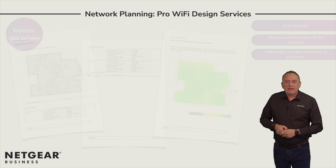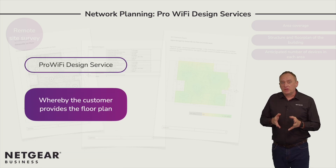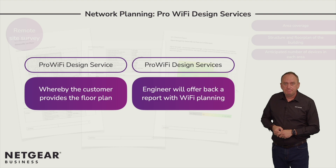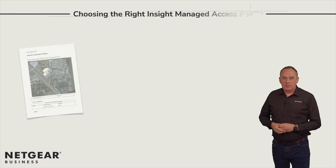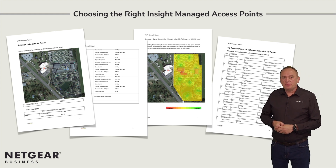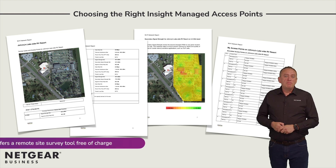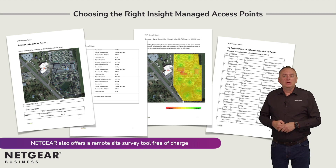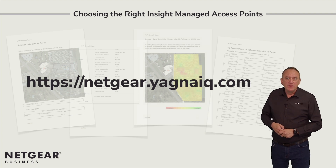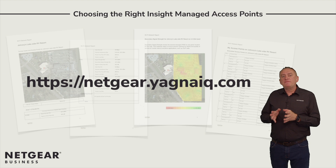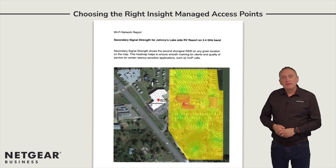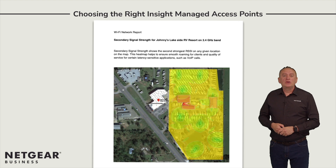Two such tools are available from Netgear. The first is the Pro Wi-Fi Design Service, whereby the customer provides the floor plan and a Pro Wi-Fi design services engineer will offer back a report with Wi-Fi planning. The second option is a do-it-yourself portal, of which there are several choices — Icalel and Hamina both have Netgear libraries to support your remote site survey. Netgear also offers a remote site survey tool free of charge, brought to you by a partnership between Netgear and Yagna. Simply head to netgear.yagnait.com and follow the steps to allow the tool to produce a first-level estimate of which Wi-Fi access points are needed for your network, based on the floor plan you provide.